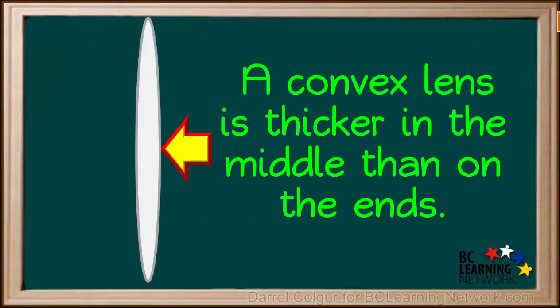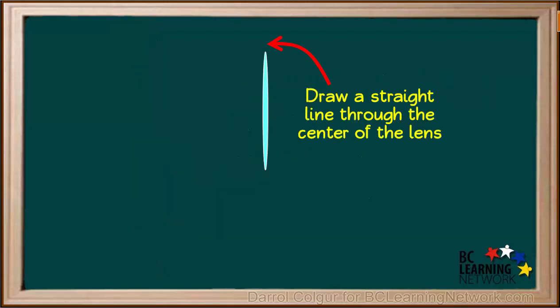A convex lens is thicker in the middle than on the ends. Whenever we need to do a ray diagram for a convex lens, we always draw a straight line through the center of the lens. A line that goes through the middle of the lens, perpendicular to the lens, is called the principal axis.